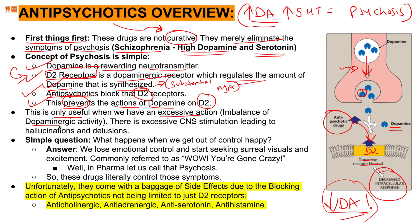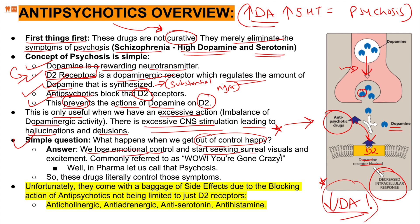If psychosis is caused by increasing dopamine, then treatment would be decreasing dopamine — and that is correct. However, this is only useful when there is excessive dopaminergic activity. If dopamine is at normal levels, blocking it would plummet it well below average. Only when there is excessive CNS stimulation leading to hallucination and delusion can antipsychotic drugs appropriately be used.